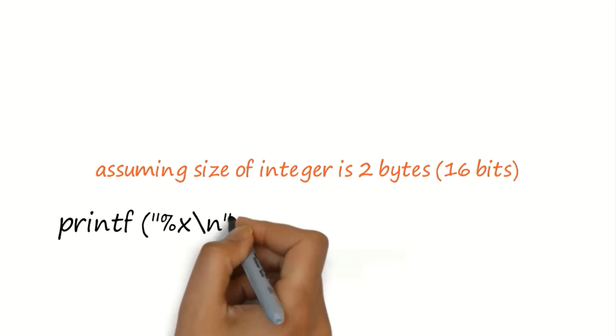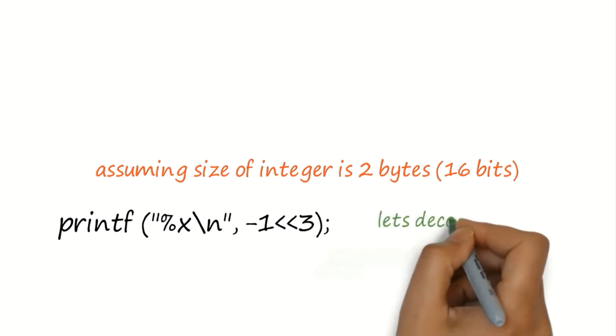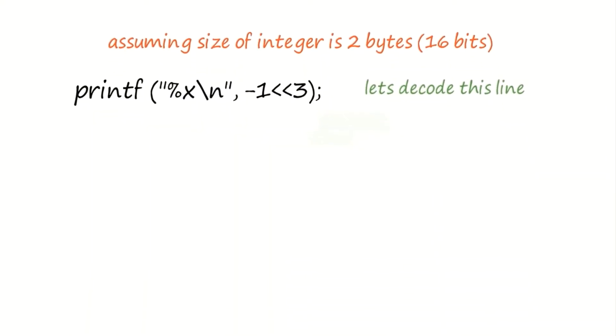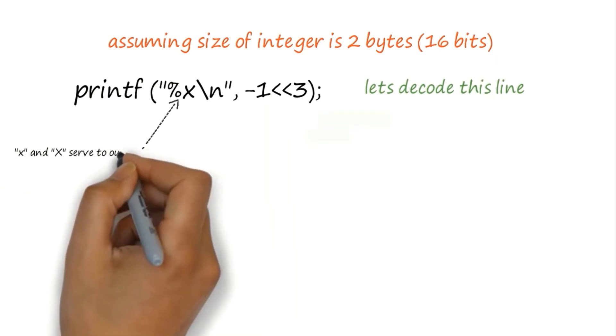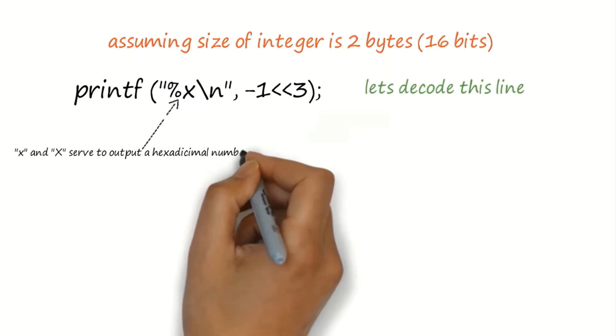Now let's try to decode the printf statement. %x denotes output will be in hexadecimal format. Hexa number representation uses a to f for representing 10 to 15.